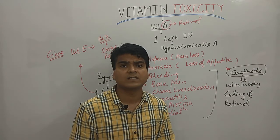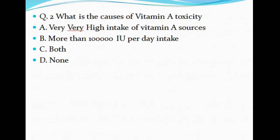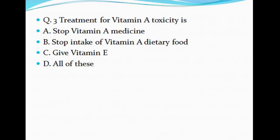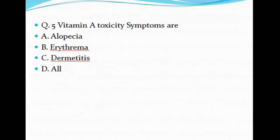Question 1: What is a symptom of Vitamin A toxicity? A) Anorexia B) Bone pain C) Chronic liver toxicity D) All of these. Question 2: What causes Vitamin A toxicity? A) Very high intake of Vitamin A sources B) More than 1 lakh IU/day C) Both D) None. Question 3: Treatment of Vitamin A toxicity is: A) Stop Vitamin A medicine B) Stop dietary Vitamin A C) Give Vitamin E D) All of these. Question 4: Vitamin A toxicity is also known as: A) Hypovitaminosis D B) Hypovitaminosis A C) Hypervitaminosis D D) Hypervitaminosis A. Question 5: Symptoms of Vitamin A toxicity include: A) Alopecia B) Erythema C) Dermatitis D) All of these.